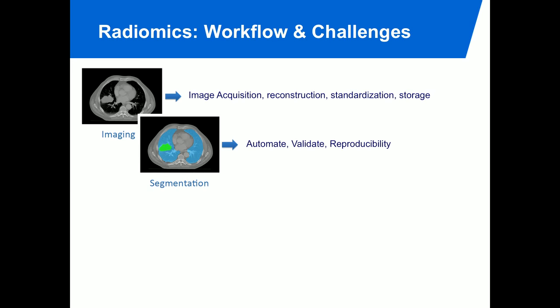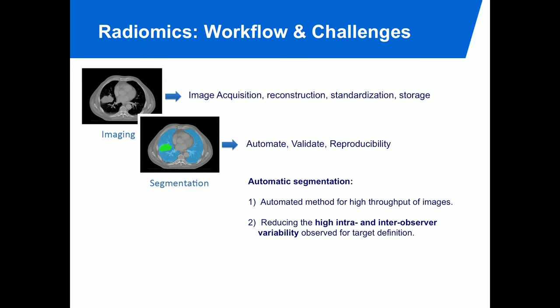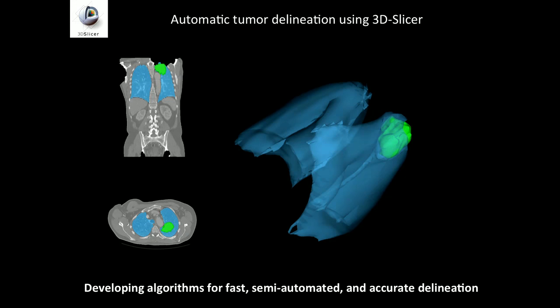Segmentation has to be automated, validated, robust, and reproducible. We try to automate this process as much as possible, because for retrospective analyses with hundreds of samples it is very difficult to go back and perform manual segmentation for all of them. We also want to reduce intra- and inter-observer variability — if you have similar radiologists delineating the same tumor, you get different results, and even if the same radiologist does it twice, you also get different results.